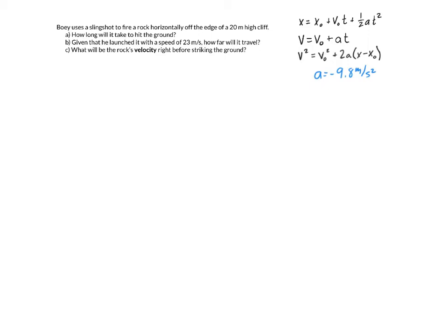Bowie uses a slingshot to fire a rock horizontally off the edge of a 20 meter high cliff. All right, so I like drawing pictures. Actually, I don't really, but in physics I do. So I'm drawing my picture. Here is Bowie. He's throwing a rock horizontally off the cliff and it is 20 meters tall.